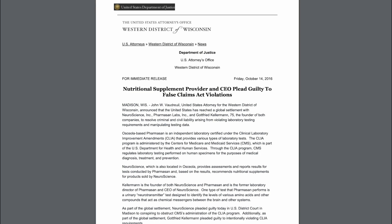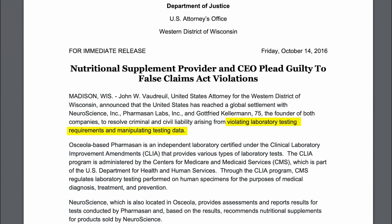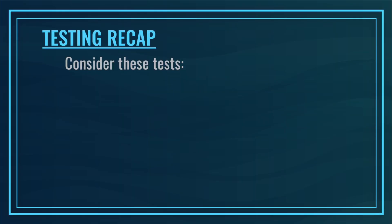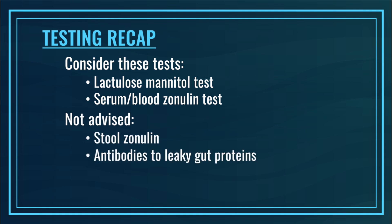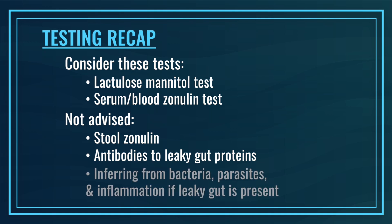This is crucially important. We've discussed in the past a neurotransmitter testing company that pled guilty to falsifying lab ranges — making the ranges too narrow so that almost everyone came back positive. So before you expend time and resources on a test, we want to know if it's accurate. The tests you should at least consider are the lactulose mannitol test or the serum blood zonulin test. I would not advise stool zonulin, antibodies to leaky gut proteins, or inferring leaky gut from bacteria, parasites, and inflammation markers.